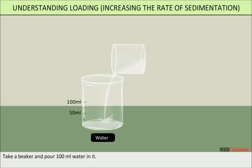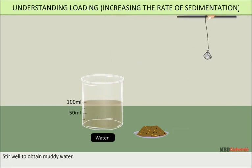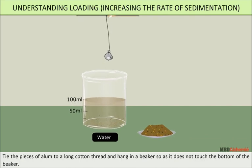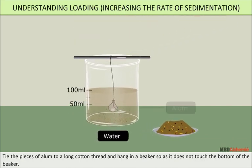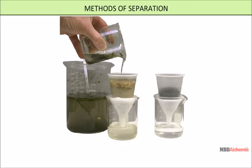Take a beaker and pour 100 milliliters of water in it. Add mud and stir well to obtain muddy water. Tie pieces of alum to a long cotton thread and hang them in the beaker so they don't touch the bottom. You will notice that the alum helps the clay particles in water to combine with each other. In a few minutes the mud will settle down and clear water will collect above the mud. Filtration is generally used to separate liquids and solids using a filter.